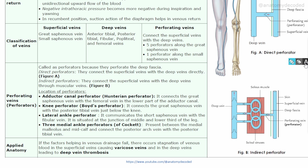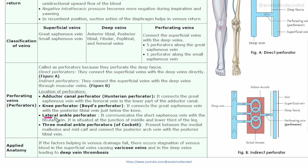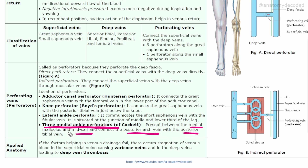The locations of perforators are: the adductor canal perforator (also called Hunterian perforator), which connects the great saphenous vein with the femoral vein; the knee perforator (also called Boyd's perforator), which connects the great saphenous vein with the posterior tibial vein; the lateral ankle perforator, connecting the short saphenous vein with the fibular vein; and three medial ankle perforators between the medial malleolus and mid-calf, connecting the posterior arch vein with the posterior tibial vein.